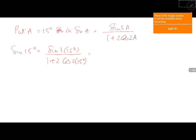Substituting the angle 15 for A gives us sin 45 degrees and cos 30 degrees, which are known angles.